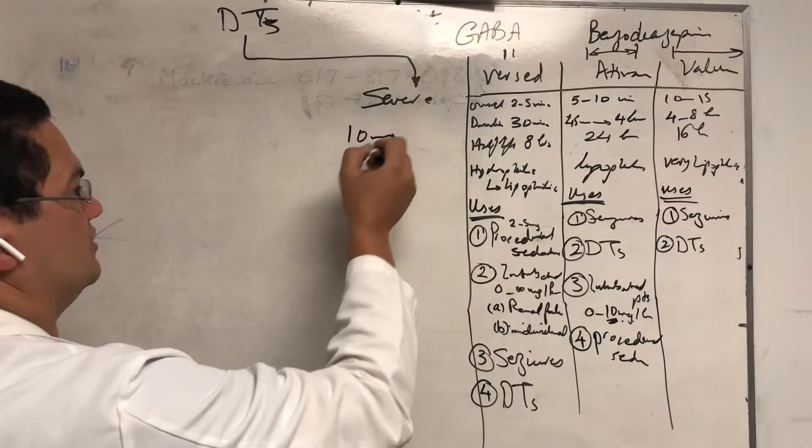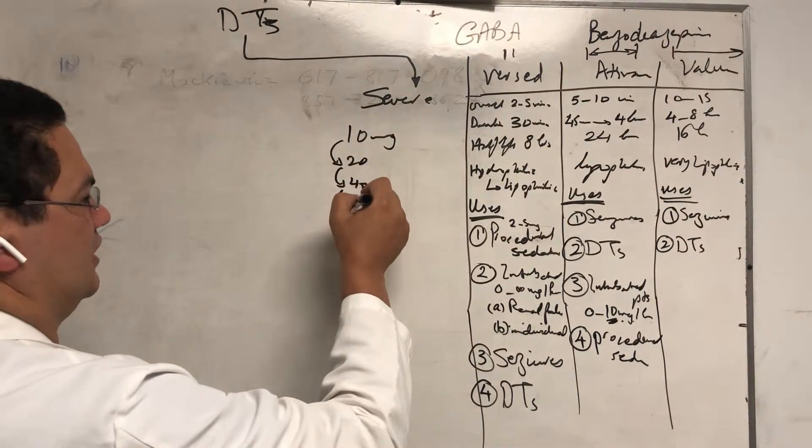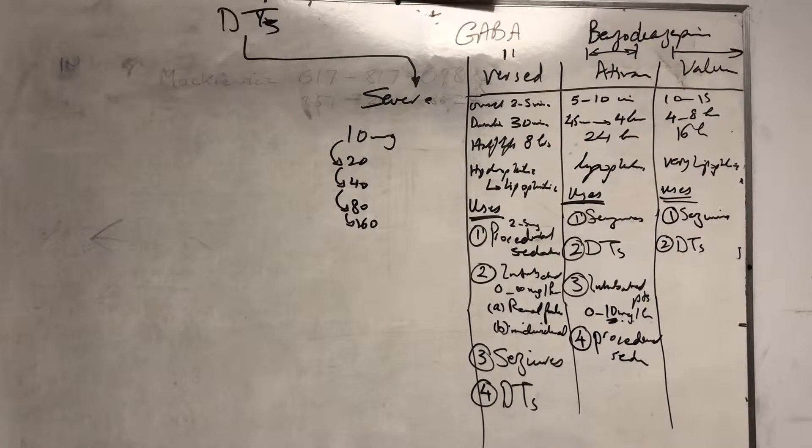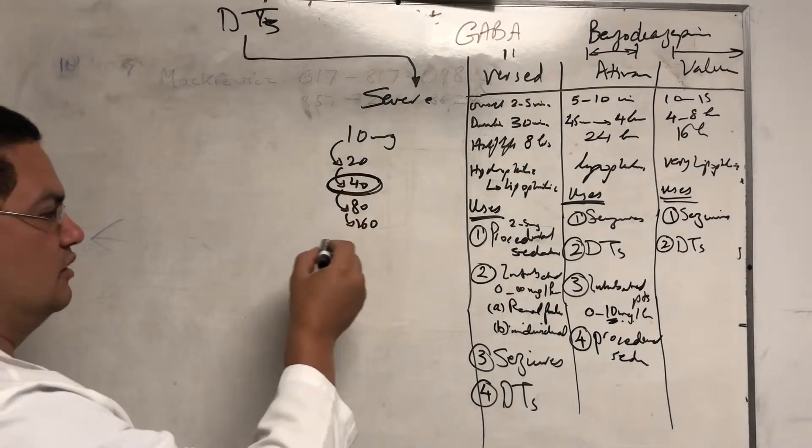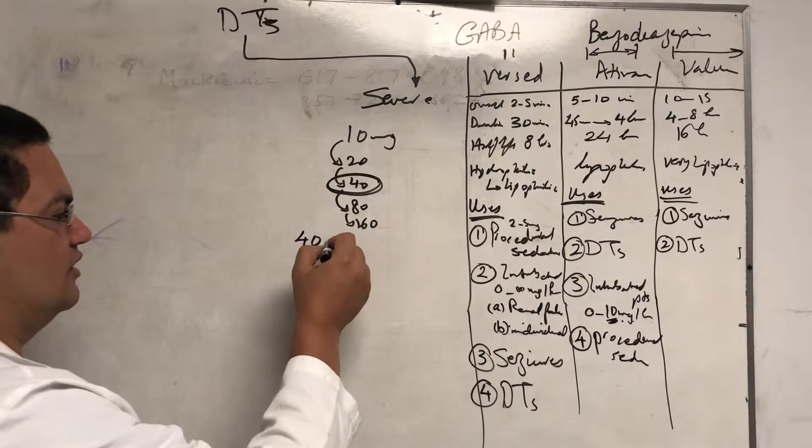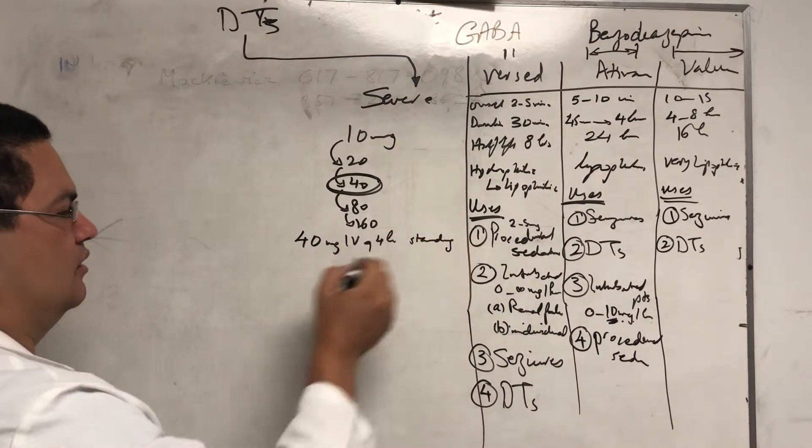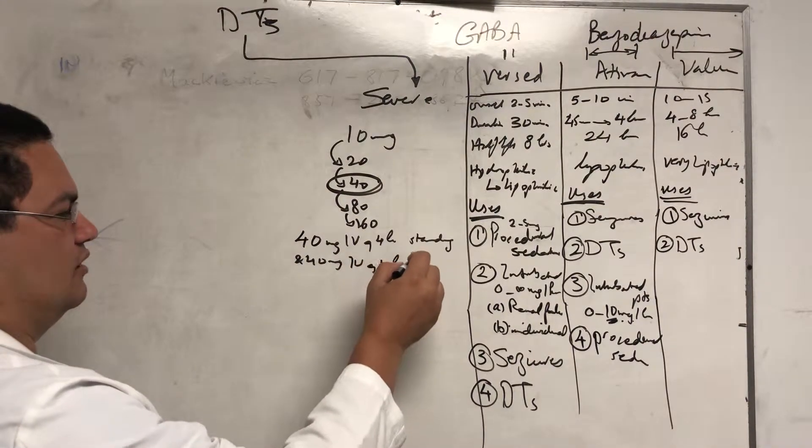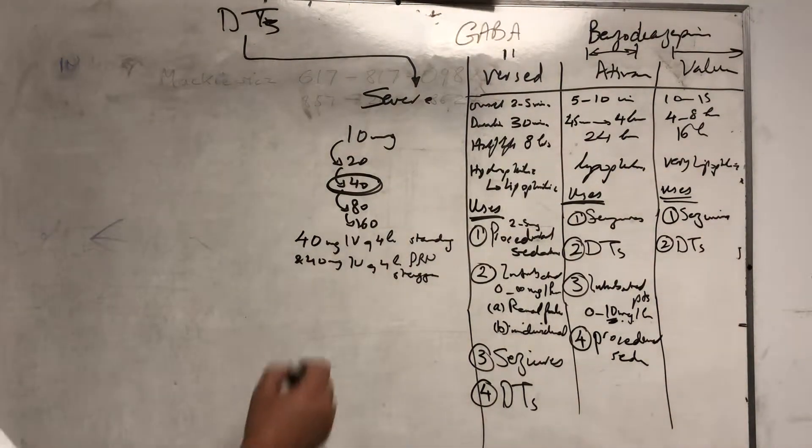You see the DT patient, give him 10 milligram of valium, still agitated within 15 minutes, give him 20 milligram and then 40 and then 80 and then 160 until the patient comes down. Then find out which dose actually put the patient to sleep. Let's say the 40 is the one, then you take that dose and put them at 40 milligram IV Q4 hours standing and 40 milligram IV Q4 hours PRN in a staggering fashion.